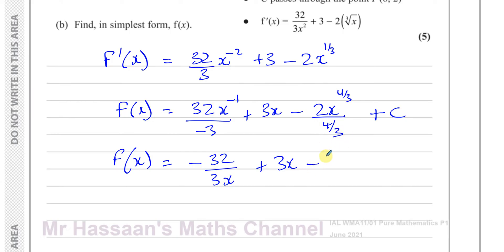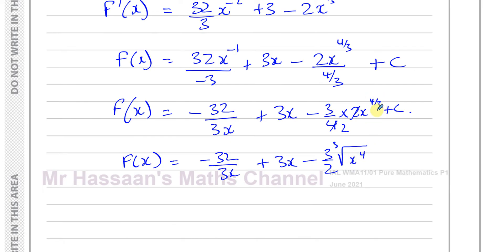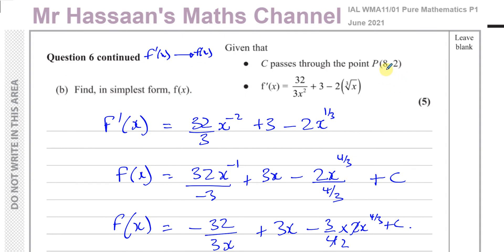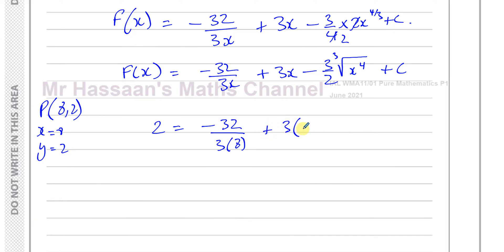So f(x) = −32/(3x) + 3x − 3/2 × (cube root of x)^4 + c. I've rewritten x^(4/3) as the cube root of x to the power 4, since for a fractional index the numerator is the power and the denominator is the root. Now I'll use the point P(8, 2) to find the value of c.